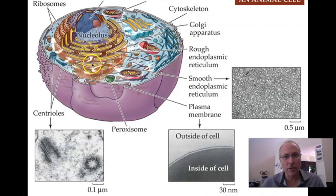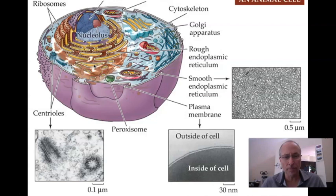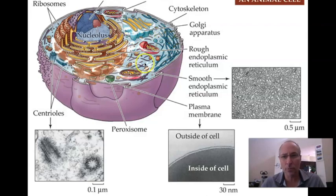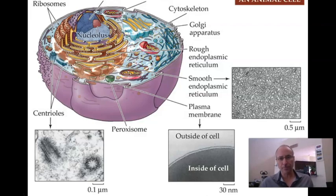Connected to it, extending out with no ribosomes and much more tubular as opposed to flat sheets, we have the smooth endoplasmic reticulum. And then we have the Golgi apparatus, and a number of other structures inside: lysosomes, peroxisomes, the cytoskeleton, and so on.